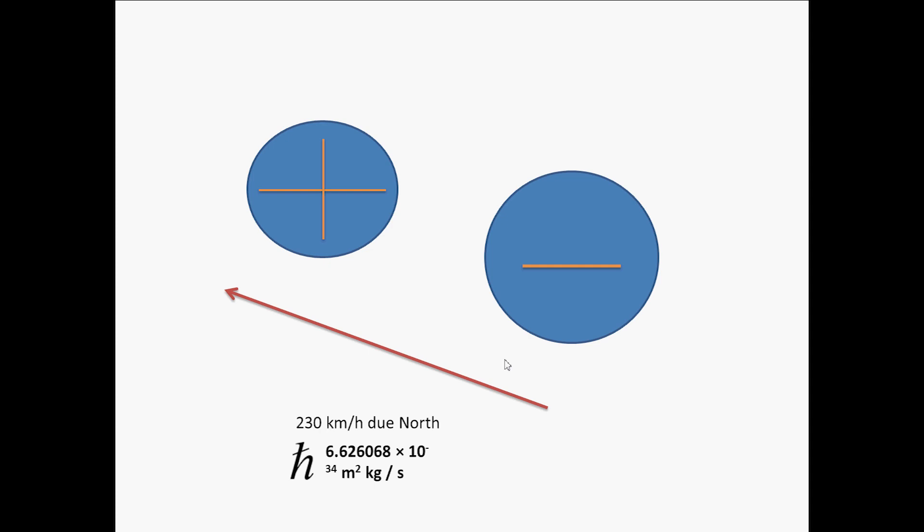Let's consider a principle called the Pauli Exclusion Principle, named after the accomplished physicist Wolfgang Pauli. It states that no two identical fermions may occupy the same quantum state simultaneously. So then, what's a fermion? It's a particle with a half-integer spin — so with a value of one-half, or 0.5.